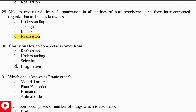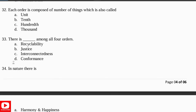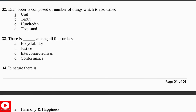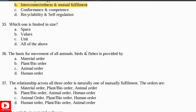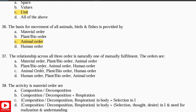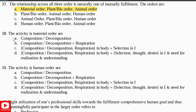Clarity on how to do things and details come from understanding. Which is the best pranic order? Answer: Plant or bio order. Each order is composed of a number of things which is called a unit. There is interconnectedness among all four orders. In nature there is interconnectedness and mutual fulfillment. Which one is of limited size? Answer: Unit. The basis for the movement of all animals, birds, and fishes is provided by the animal order. The relationship across the three orders is naturally one of mutual fulfillment. These orders are: material order, plant or bio order, and animal order.